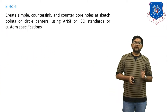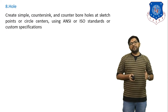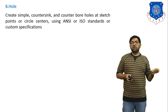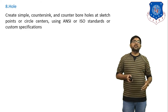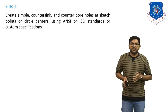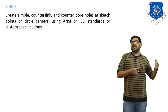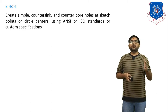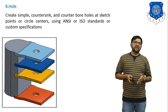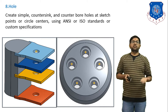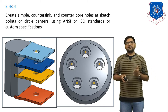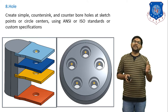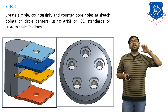Next is the hole feature. If you want to create a hole in any 3D object, you can create a simple hole, countersink, or counterbore using this feature. You can specify holes at a sketch point or circle center using ANSI or ISO standards or custom specifications. The two figures show a simple hole and a counterbore or countersink type. You can draw a single hole from a sketch or drill multiple holes at a later time.